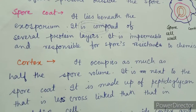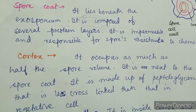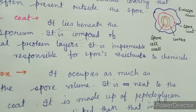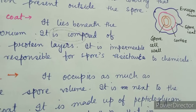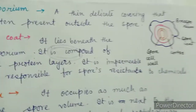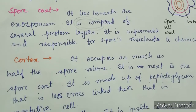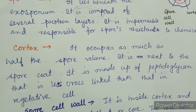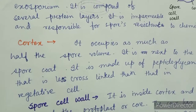The next part is the cortex. It occupies as much as half of the spore volume and is located next to the spore coat. It is made up of peptidoglycan that is less cross-linked than that in vegetative cells.